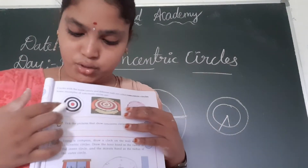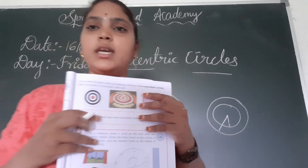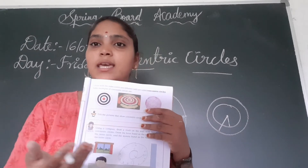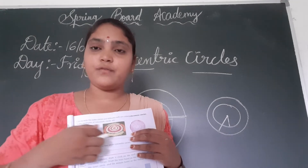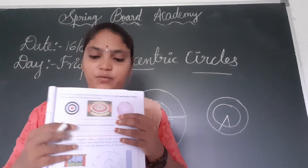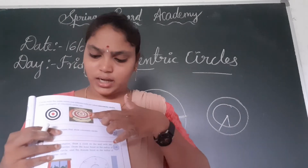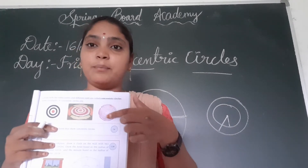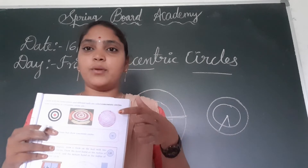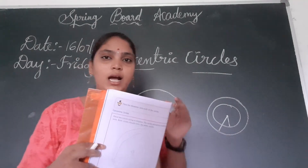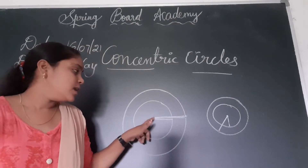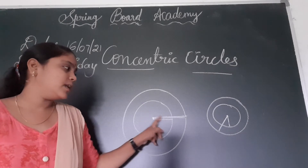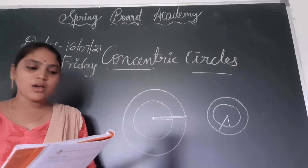Here you can check — is this an example of a concentric circle or not? Concentric circles have the same center. This red dot is the center, and the radius of these circles are different. Here there is also a kolam example — this is also an example of a concentric circle. And here you can check the slice of onion — this is also an example of concentric circles. Concentric circles have the same center and different radius.